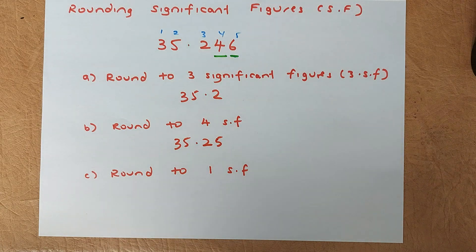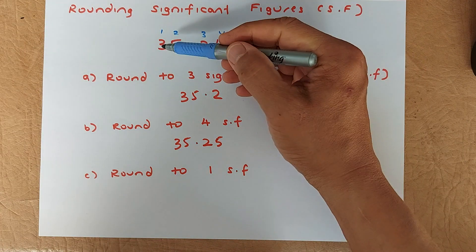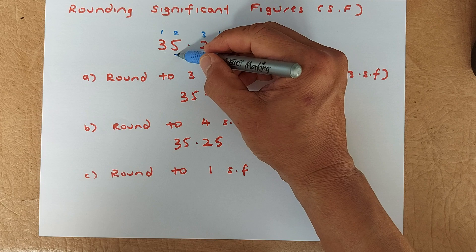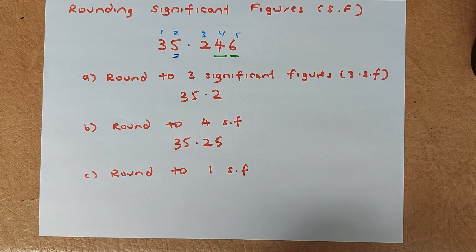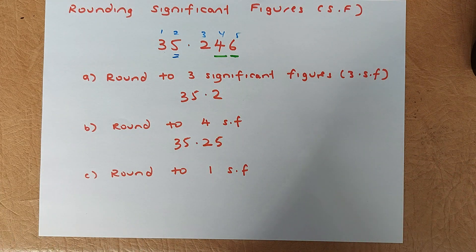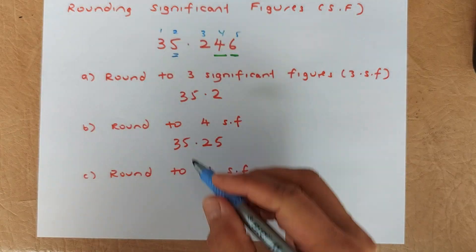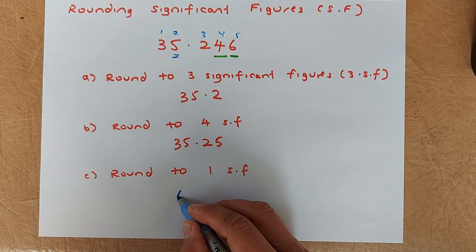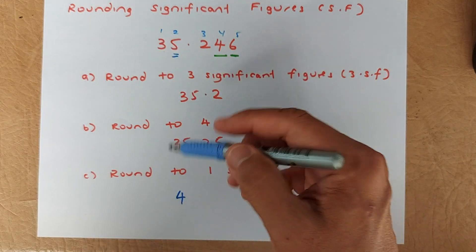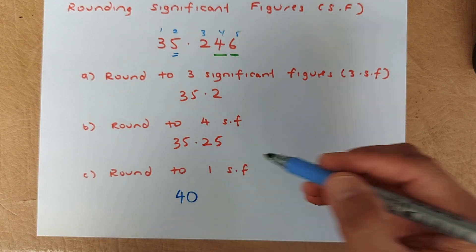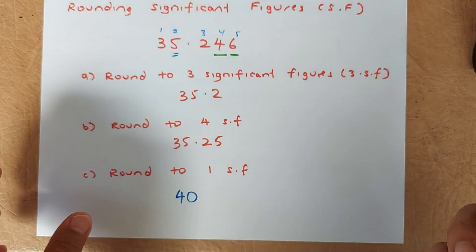Now an interesting question: round 35.something to one DP. If rounding to one DP, you look at the second number, which is five. Since five or more means you round up, the three becomes a four. But because 35 cannot simply become a four, the answer is 40. Hope you got it.